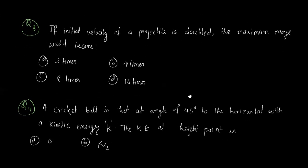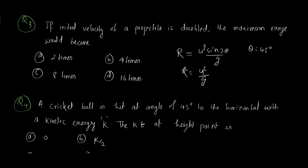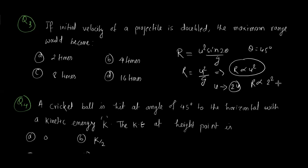Question 3: If the initial velocity of a projectile is doubled, the maximum range would be? Maximum range R = u²/g (at θ = 45°), so R is directly proportional to u². If velocity is doubled to 2u, the range increases by a factor of 2² = 4. The range becomes four times the original. Correct answer is option B.